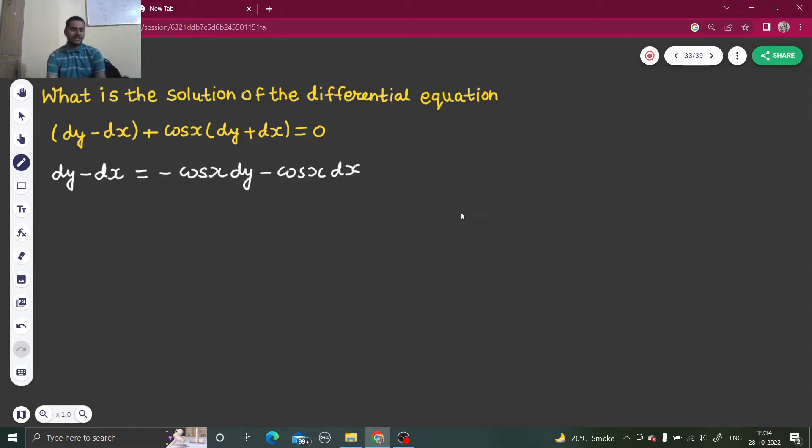Take terms containing dx to one side and terms containing dy to the other side. Don't worry that cos x is with dy, we will see that. So cos x dy and dy can be on one side. So dy plus cos x dy equals to - take dx to the other side. Now I can take dy common. I can take dx common.